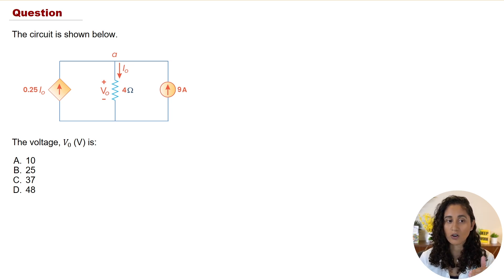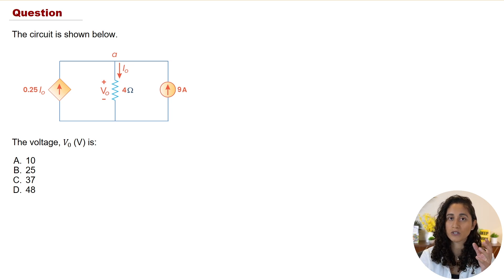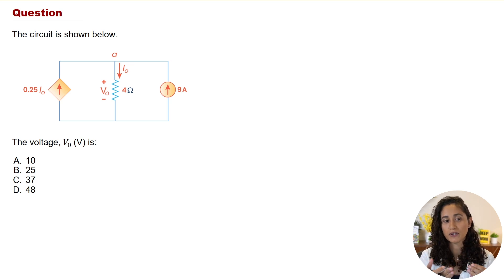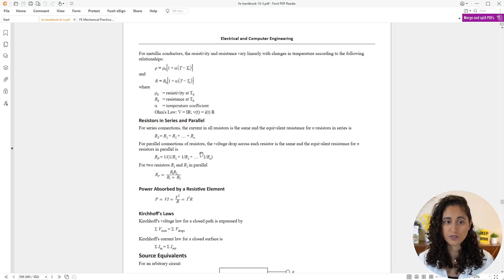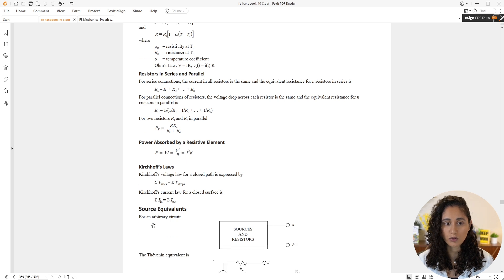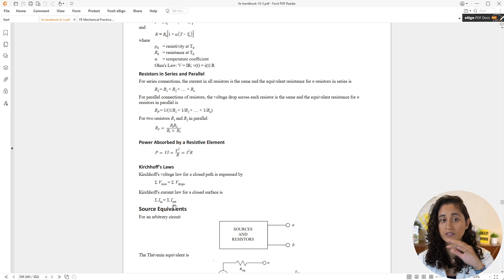In the previous example where we had to determine the current, we used Ohm's law and then KVL (Kirchhoff's Voltage Law). Now here we're going to use KCL and then Ohm's law, because here we have a current source. Let's go to the reference handbook — in the electrical and computer engineering section, you are given the Ohm's law equation V = I × R, and also the KCL equation, which says the sum of currents in equals the sum of currents out.